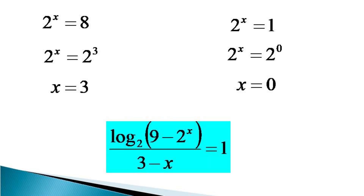Looking at the given equation, it can be verified that x equal to 3 does not satisfy it, as the left-hand side becomes 0 by 0 for x equal to 3, so this value is discarded. Checking x equal to 0, it can be seen that x equal to 0 satisfies the given equation. Hence x equal to 0 is the solution to the given equation. Thanks for watching.